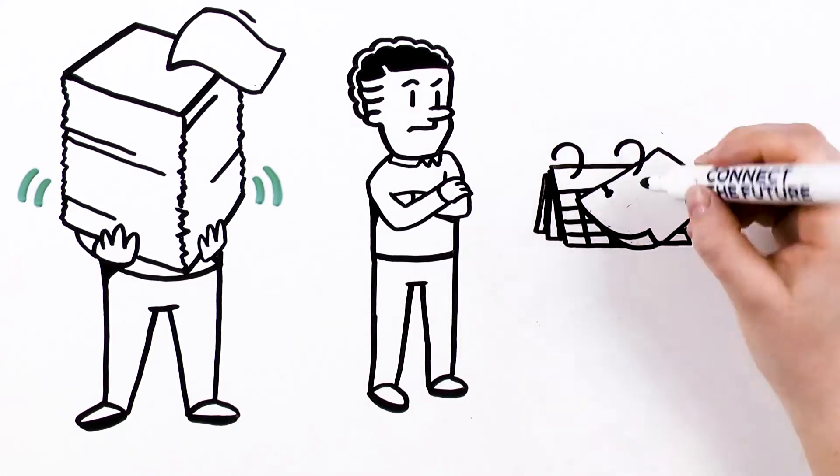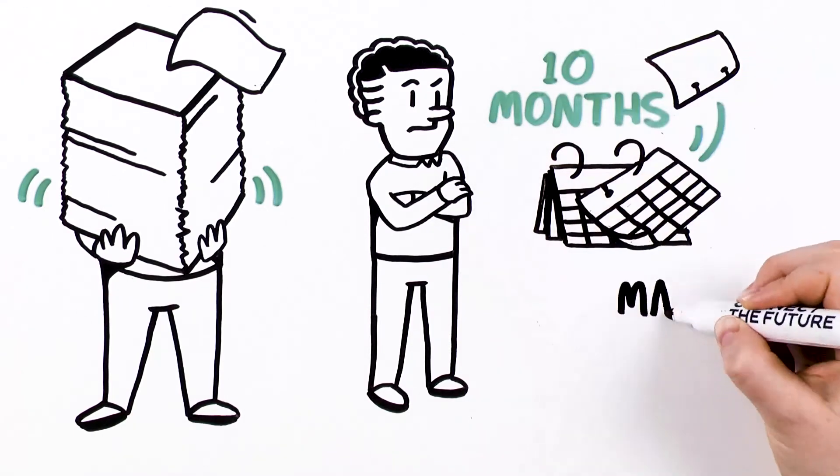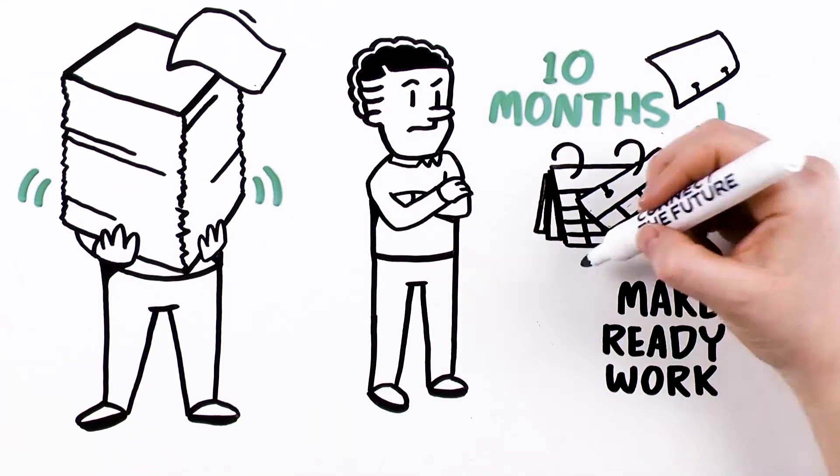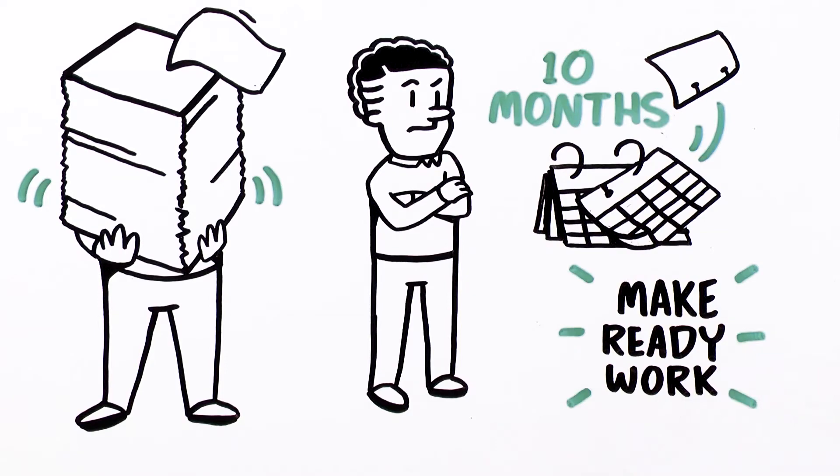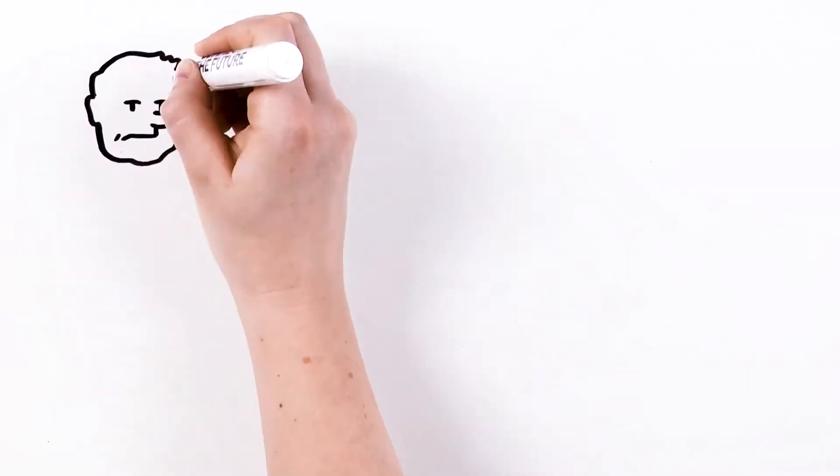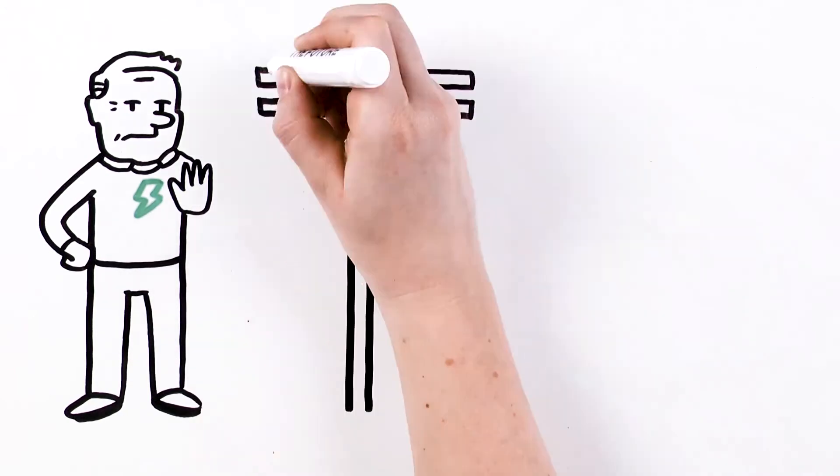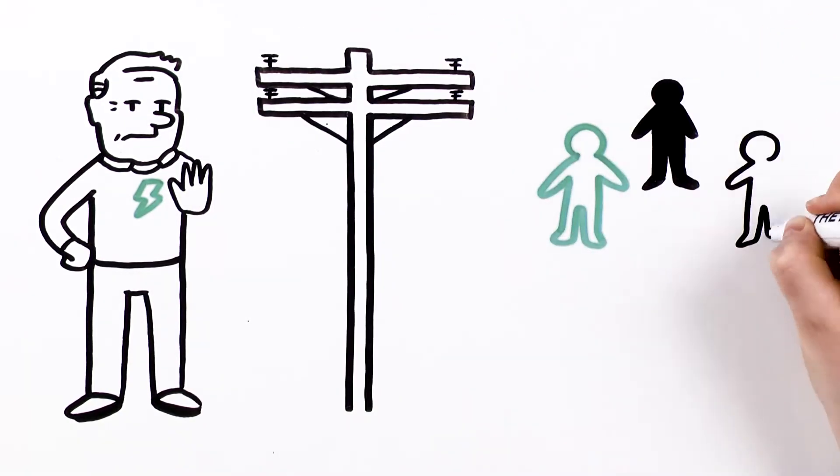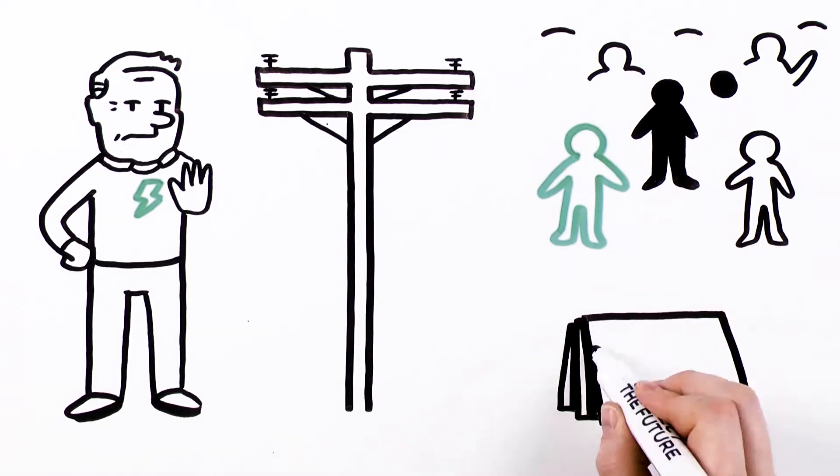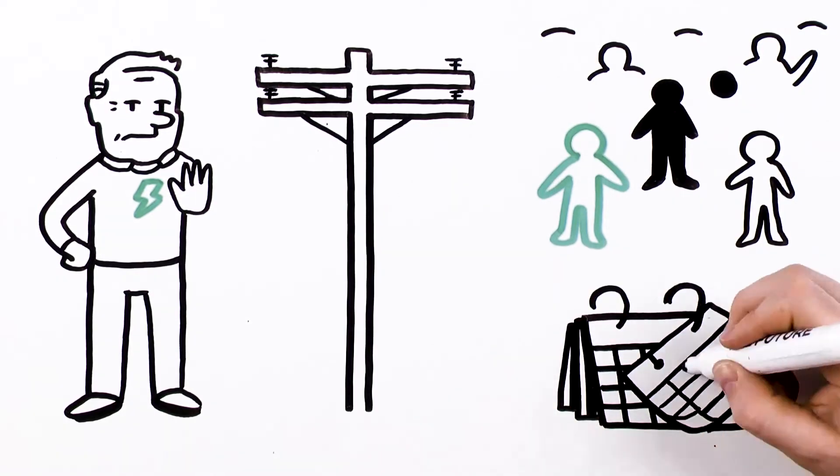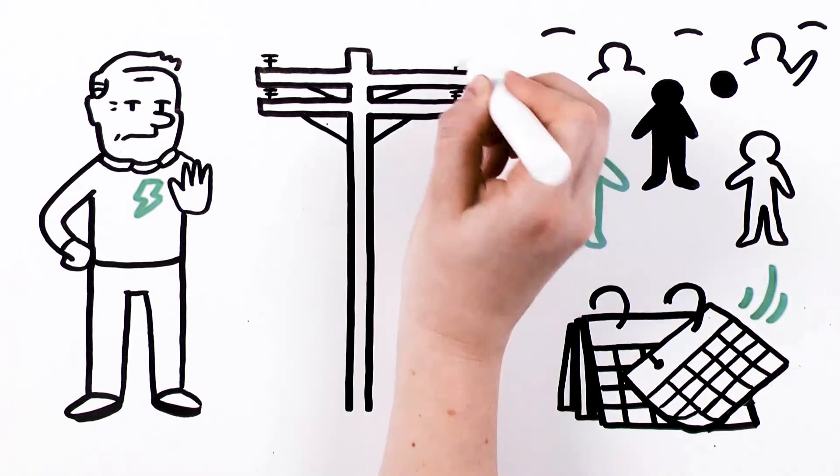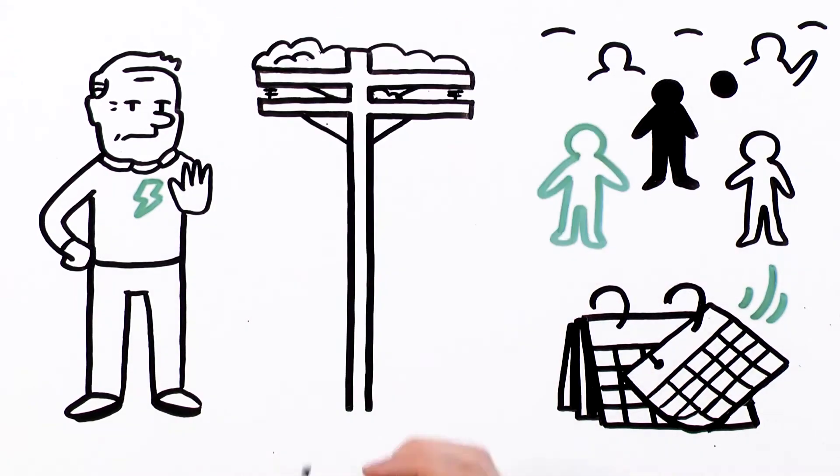Even in best case scenarios, it can take up to 10 months to resolve make-ready issues, which must be complete before build-out can begin. A dispute over just one pole can stop access for everyone down the line. And pole owners don't always adhere to set timelines. A missed deadline can delay internet service for months or even years, especially in rural areas where weather or crop seasons can limit building opportunities.